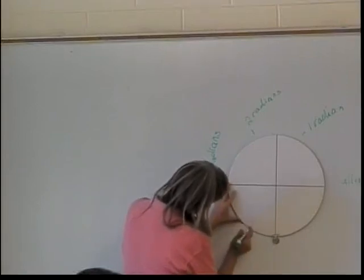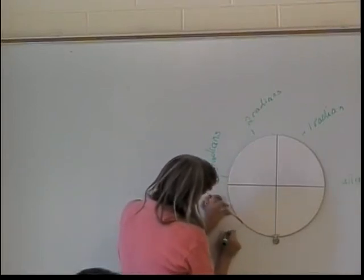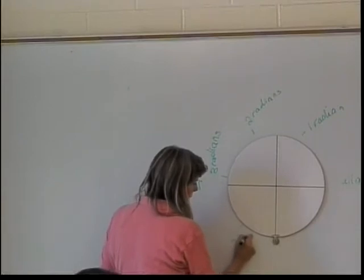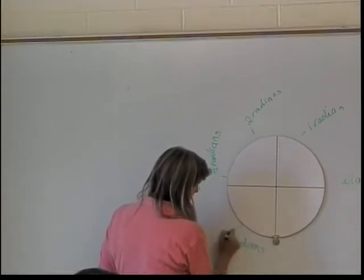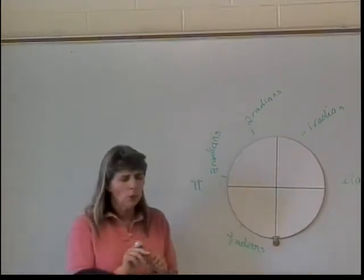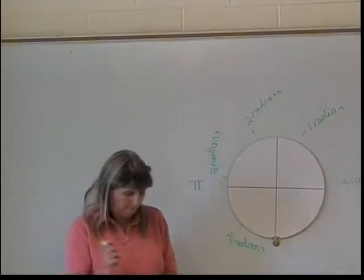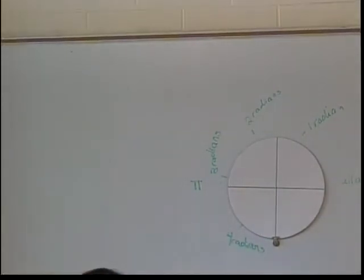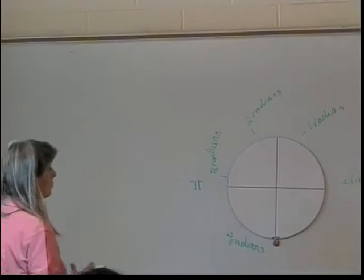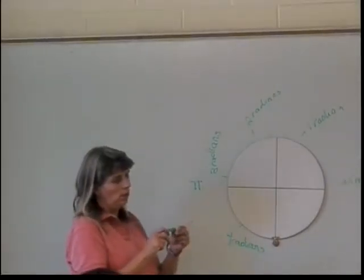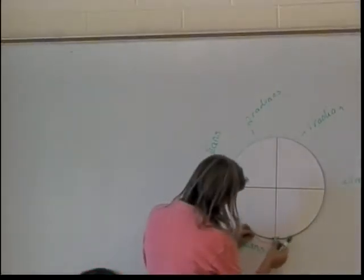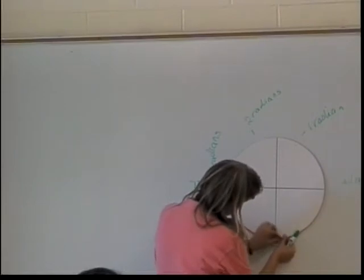Put it around. Oh yeah, it looks good. So right here is four radians. Marker's dying. Where do you think five radians will be? Quadrant four. Do you think it's going to be in quadrant four? Let's see. Yeah, it looks like it'll be in quadrant four.